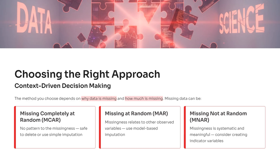2. Missing at random, or MAR. Here, the missingness is related to other observed variables. For example, age might be missing more often in a certain income group. In this case, use model-based imputation — like regression or machine learning algorithms — to predict the missing values.